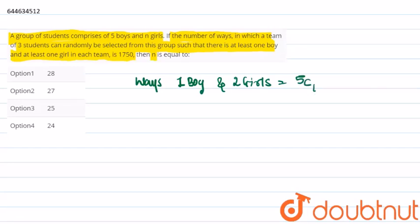And ways for selecting two boys and one girl is 5C2 into nC1.